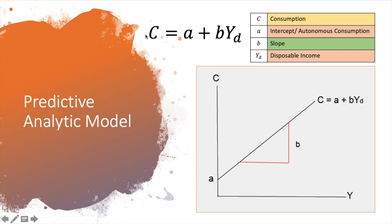So we can see here, C refers to consumption, A refers to intercept. Now in this case here, for consumption function, when we talk about intercept here, intercept here refers to autonomous consumption.